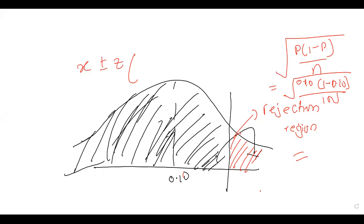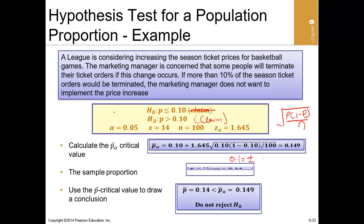This is a one-tailed test, as we can see from the diagram. For a one-tailed test at 95% confidence, the Z value for the upper limit will be 1.645. If it is 95% confidence, one-tailed, the Z value is going to be 1.645.